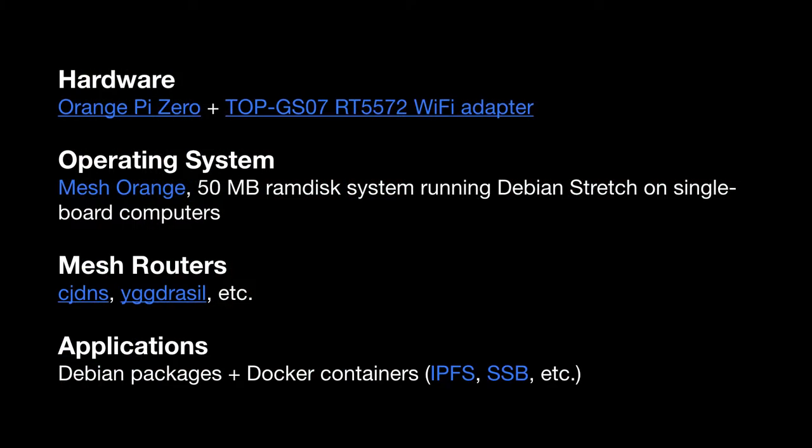Early on in 2017 we set out to build something where people can install a node with the physical hardware and software to do this. One objective for the hardware is that it has to be off the shelf. We started with a Raspberry Pi, but it's not the cheapest for the performance. An Orange Pi is about $10 American, and we found an adapter that can mesh at 5 GHz for $6 — so this is actually a $20 node with the SD card.